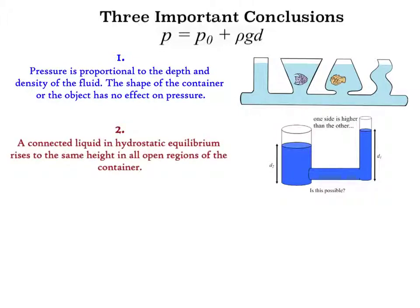Second, a connected liquid in hydrostatic equilibrium will rise to the same height in all open regions of that container. So, this figure here shows two connected tubes. The larger volume of liquid in the wide tube weighs more than the liquid in the narrow tube. So, will this weight be able to push the liquid in the narrow tube up higher? That is, is this situation here even possible? Well, if depth D1 were larger than depth D2, then according to the hydrostatic pressure equation, the pressure at the bottom of the narrow tube would be higher than the pressure at the bottom of the wide tube. Anytime there's a pressure difference, fluid will flow. So, this pressure difference would cause the liquid to flow from right to left until all the heights were equal. Therefore, a connected liquid in hydrostatic equilibrium rises to the same height in all open regions of the container.